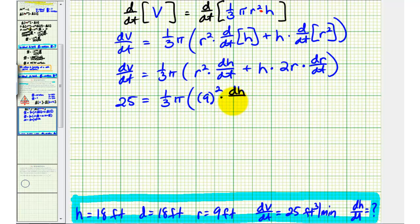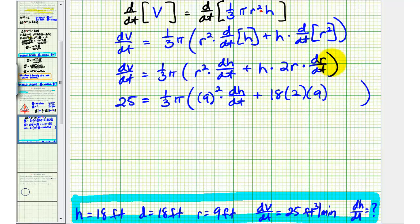Which we're trying to solve for, plus h, which we know is 18 feet, times two times r, we know is nine, times dr/dt.